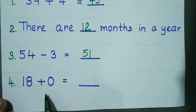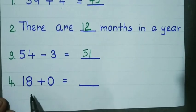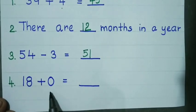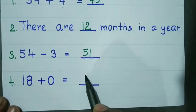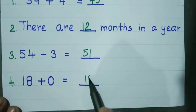18 plus 0. Any number added with 0 gives the same number. So, 18 plus 0 is 18.